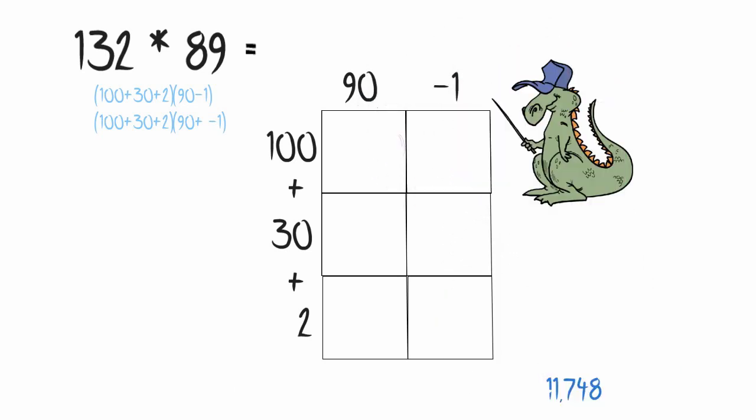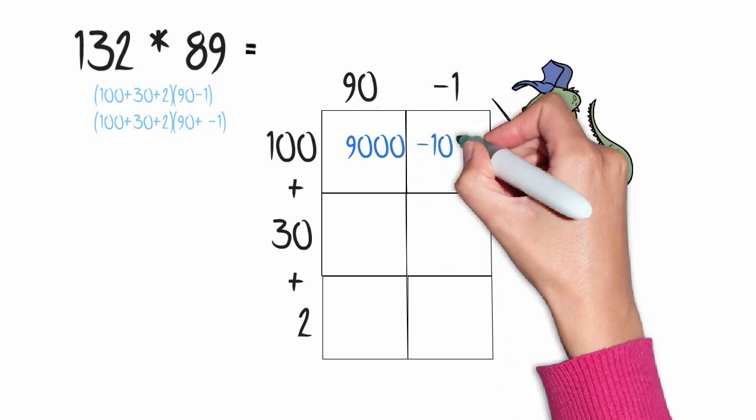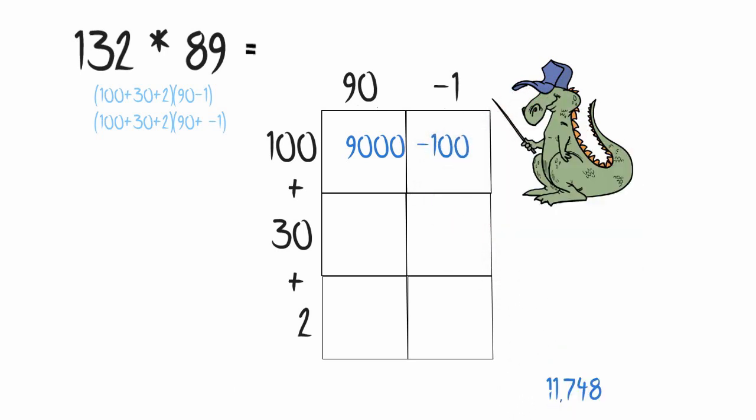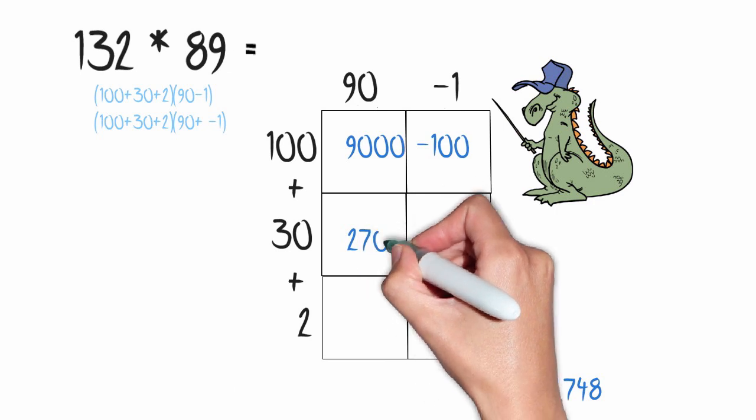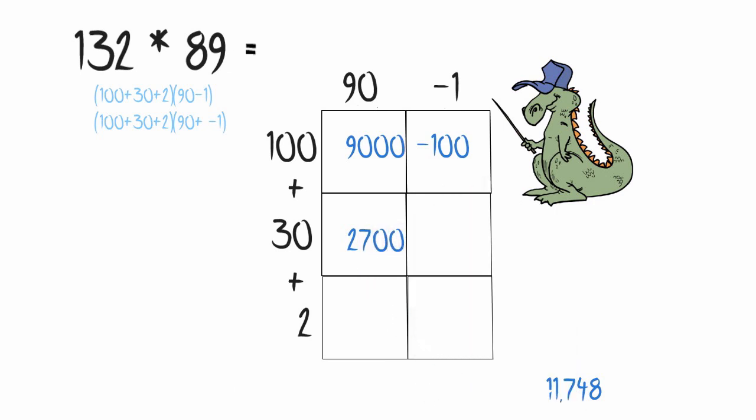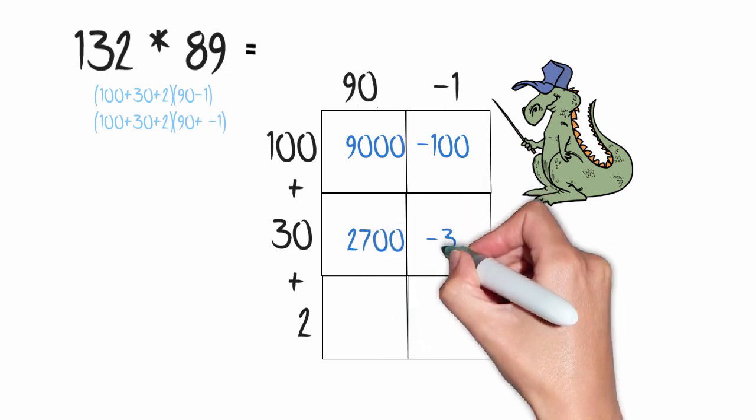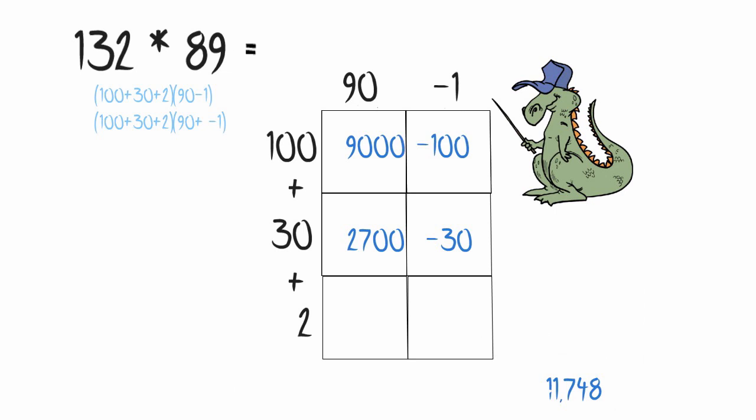100 times 90 is 9,000. 100 times negative 1 is negative 100. 30 times 90 is 2700. 30 times negative 1 is negative 30. 2 times 90 is 180. 2 times negative 1 is negative 2.